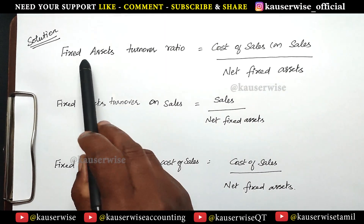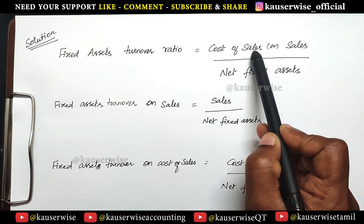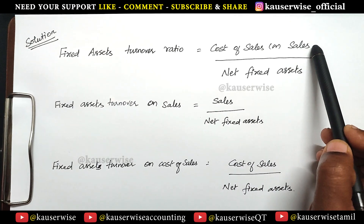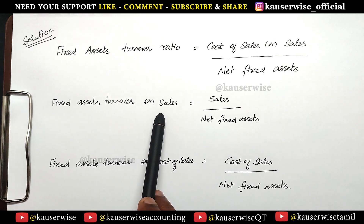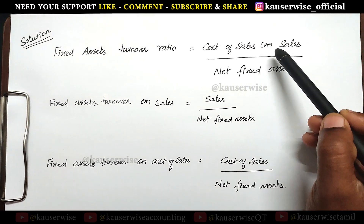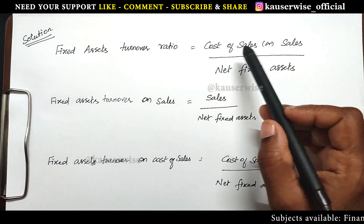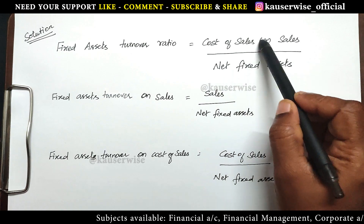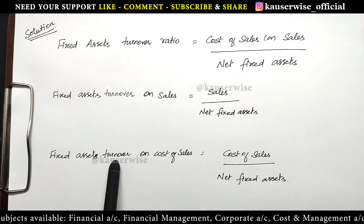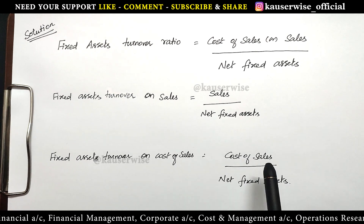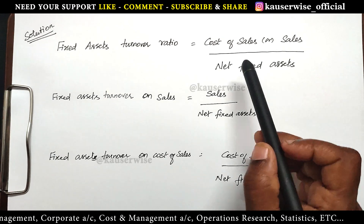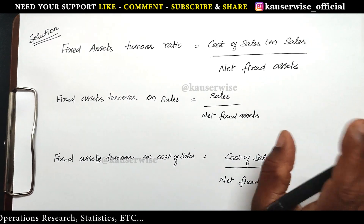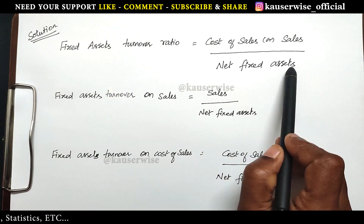The formula to find fixed asset turnover ratio is: cost of sales or sales divided by net fixed asset. If you have only sales, use sales divided by net fixed asset. If gross profit is given, calculate cost of sales using: sales minus profit. The formula then becomes cost of sales divided by net fixed asset. Net fixed asset equals total fixed asset minus depreciation, if any; otherwise use total fixed asset.